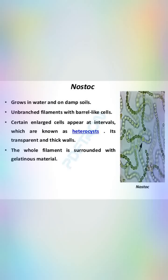Assalamu alaikum friends. Today we discuss the topic of Nostoc, which grows in water and on damp soil on branch filaments. With barrier-like cells, certain enlarged cells appear at intervals which are known as heterocysts. Heterocysts are transparent and thick-walled. The old filament is surrounded with gelatinous material.